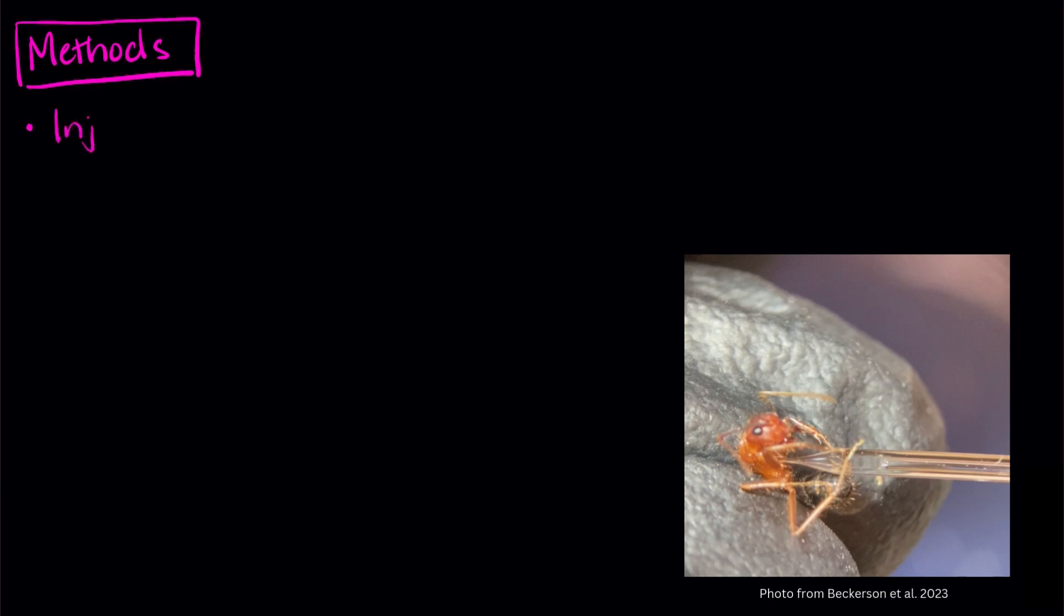The researchers started by injecting ants with afflatrem to see if it impacted their behavior. They had four different amounts of afflatrem and two controls. Afflatrem isn't soluble in water, so they had to dissolve it in acetone.